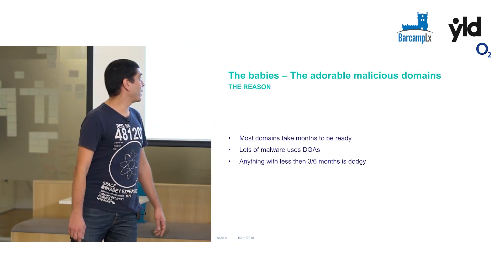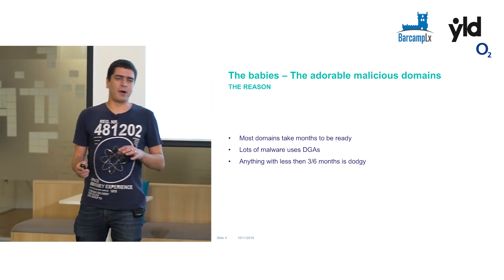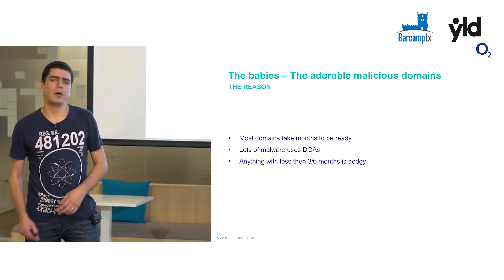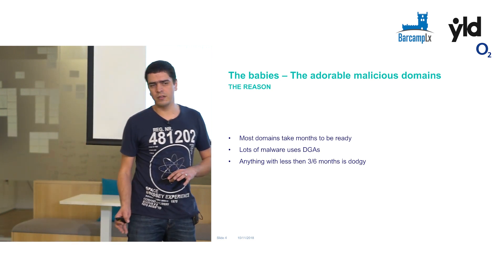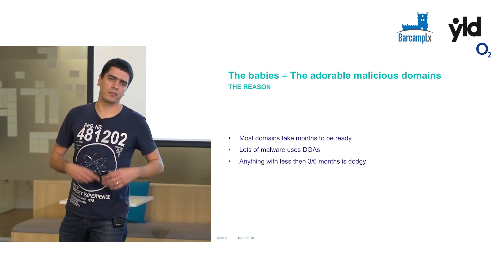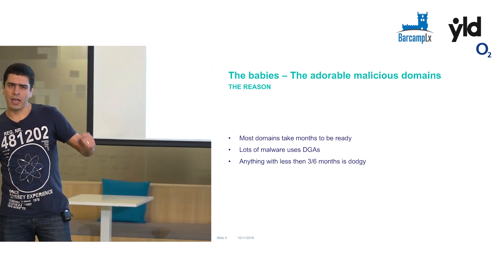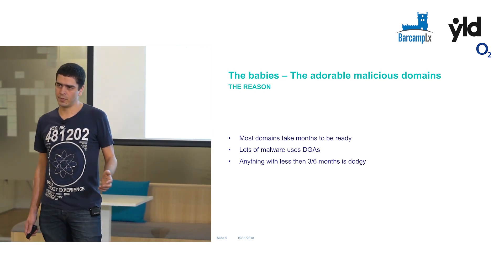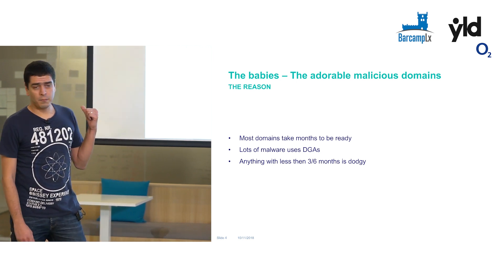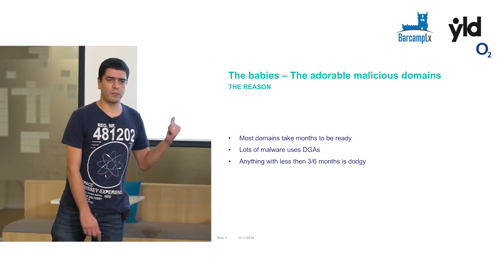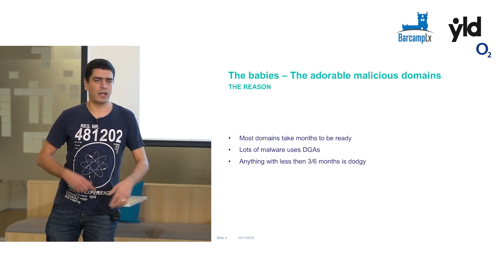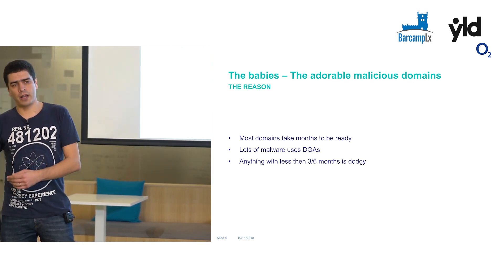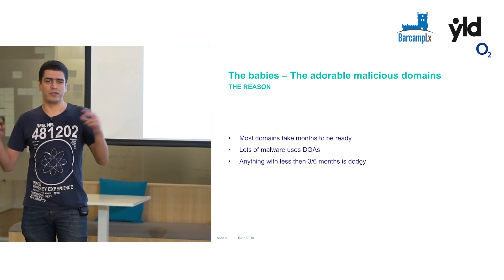So let's start with the babies. Why do we care about that? If you think about it, let's say you're coming up with a startup — you register the domain, you start building your website, your content. By the time you actually have people visiting your website, it's going to take like three to six months. Another thing: malware uses DGAs — domain generation algorithms. Basically an algorithm that every day or every week generates a new domain to talk to its master.